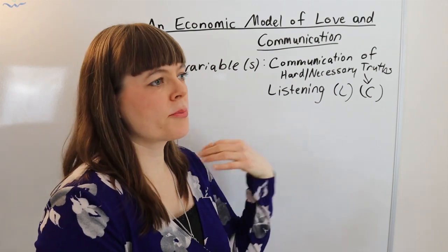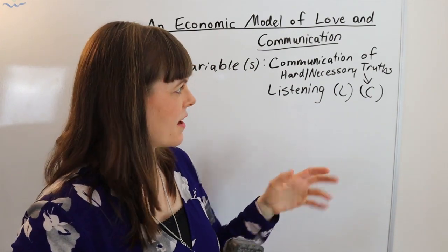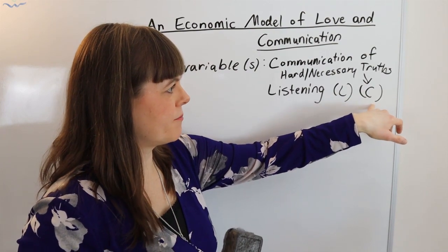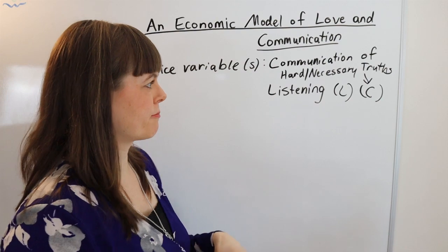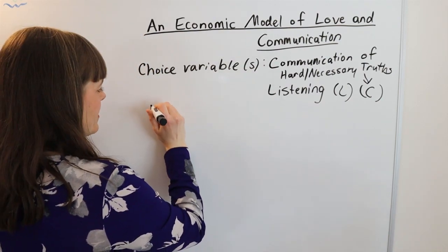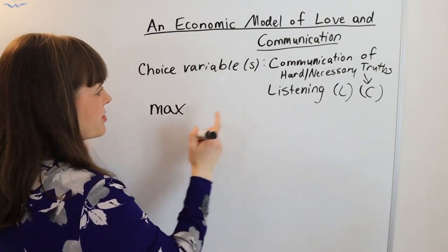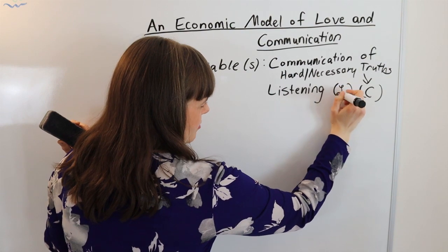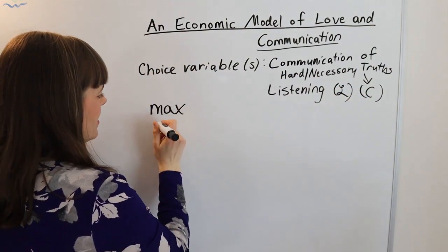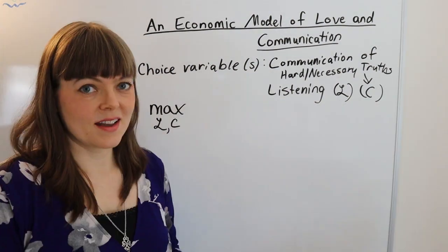So I will call this L for listening and C for communication of hard or necessary truths. This is basically communication of things that, if the two of you can work through this thing, then the relationship will be improved or will be better long-term. So when I'm going to set this up, I'm going to set up a maximization problem where I'm maximizing some objective function by choosing my two choice variables, which need to be much more distinguished than that. So let's let that L be a curly L and C for communication.